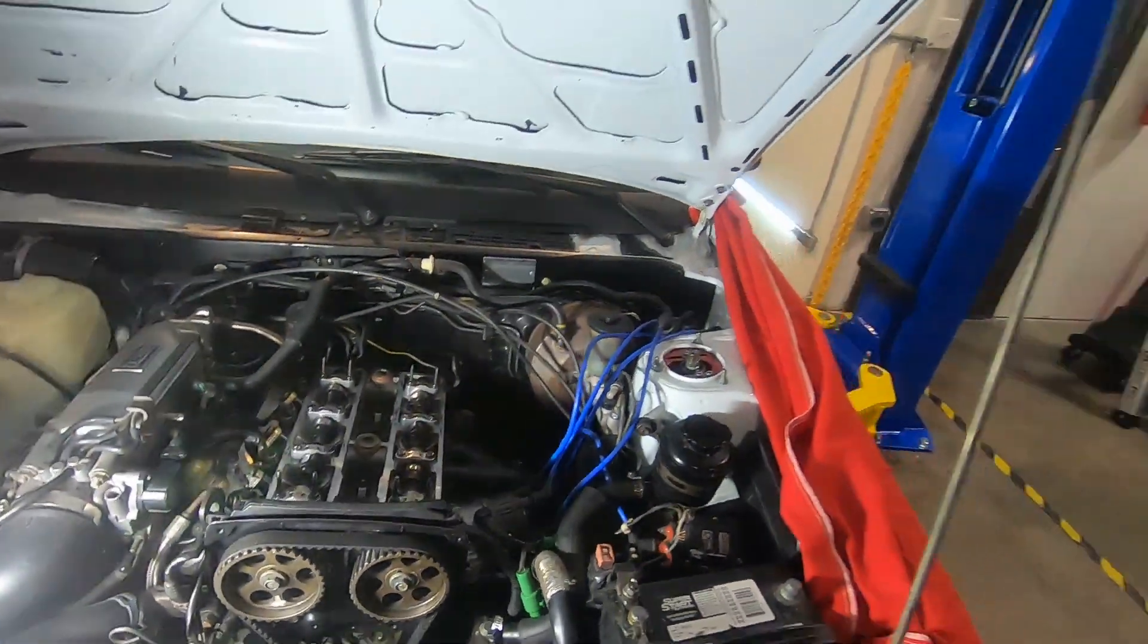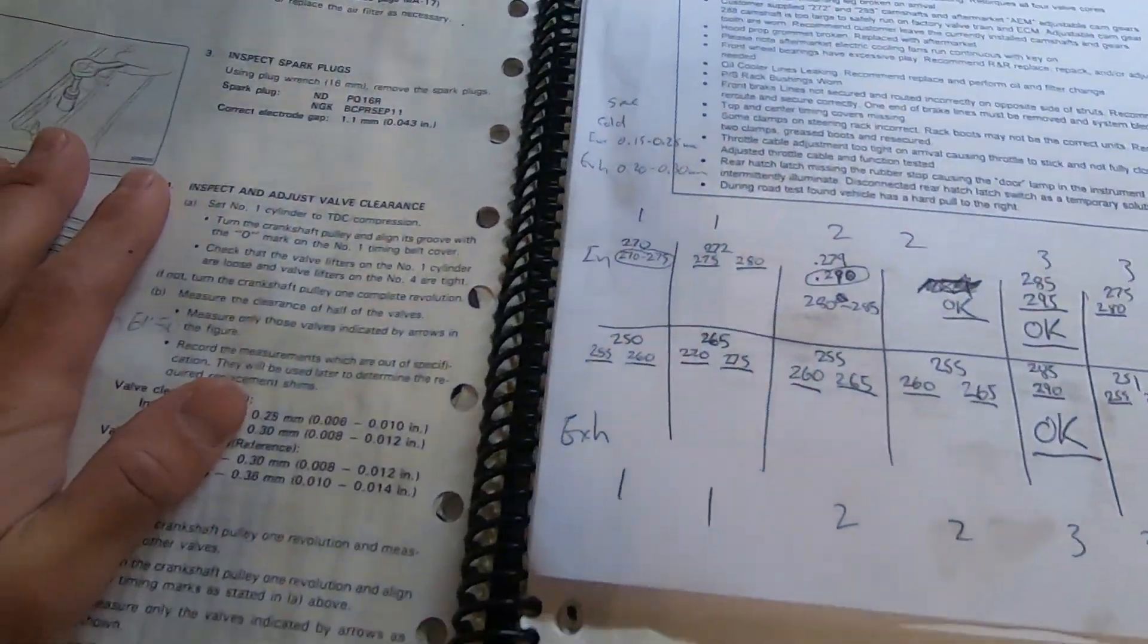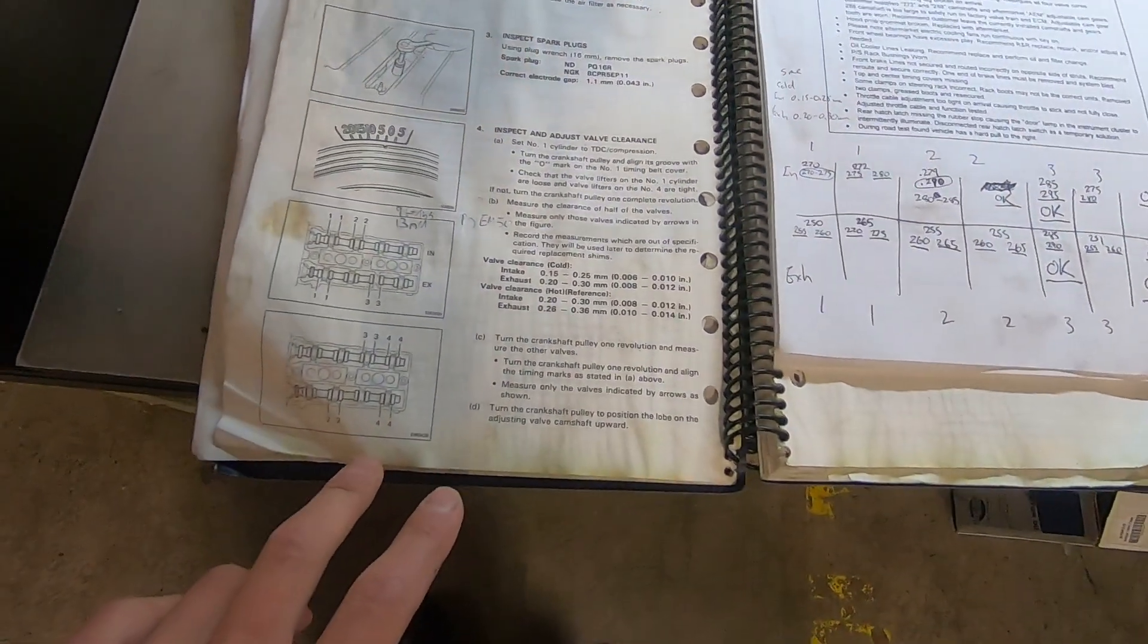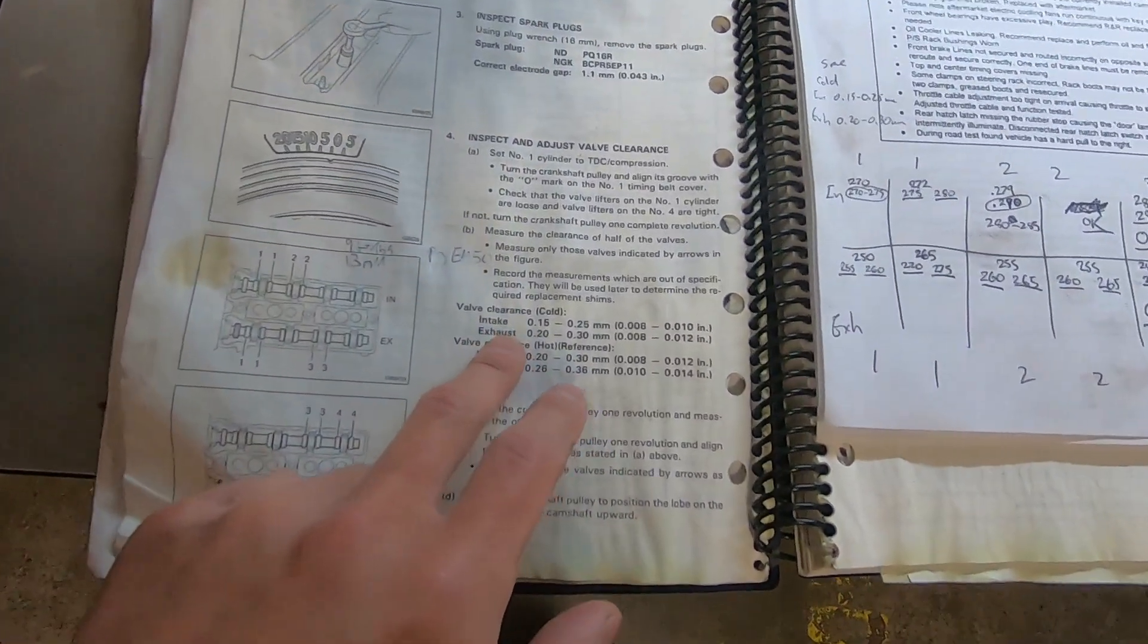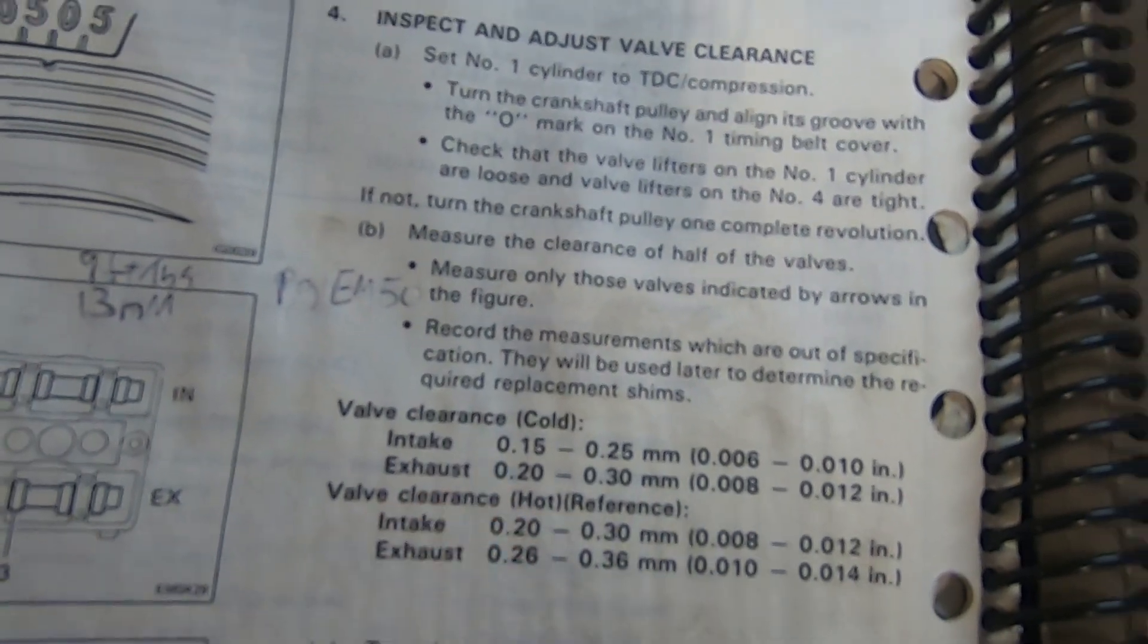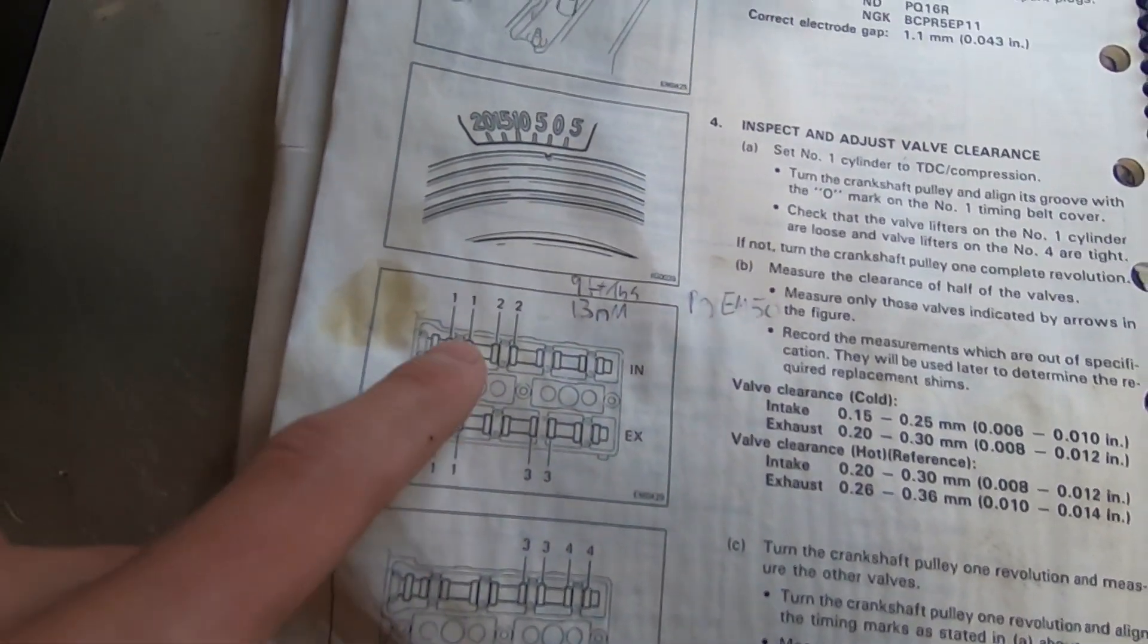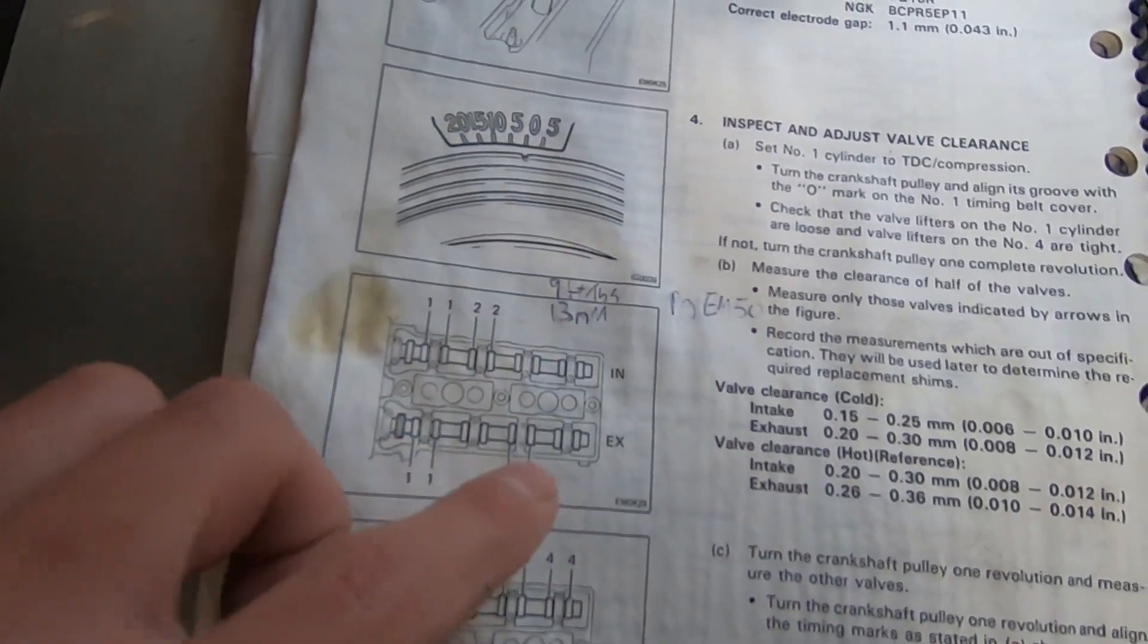Make sure you have your service manual out at page EM6. That's where you get your valve adjustment specs. Here's the specs. We're going to look at the cold specs. So at TDC intake stroke, we'll be checking the valve clearance for these ones.